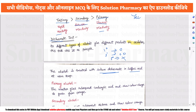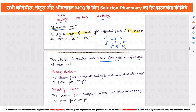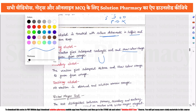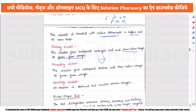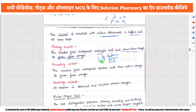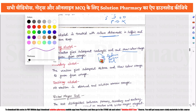For primary alcohol reacted with sodium dichromate and sulfuric acid, the product is carboxylic acid. The color change occurs slowly, going from orange to green. If the sample turns green, it indicates primary alcohol.